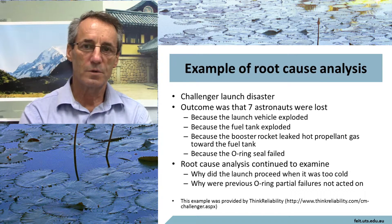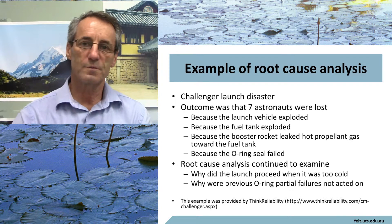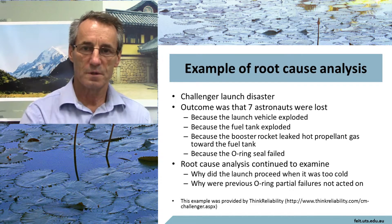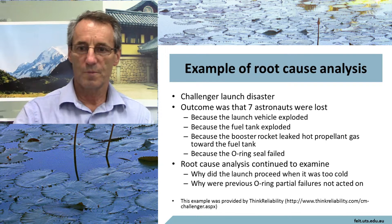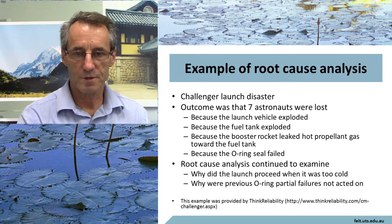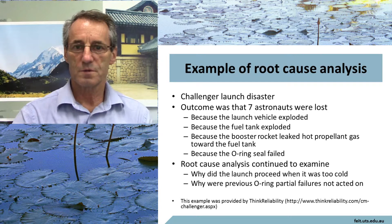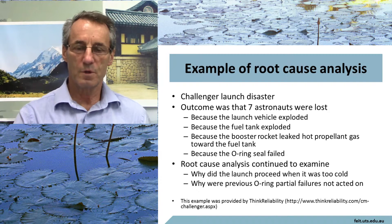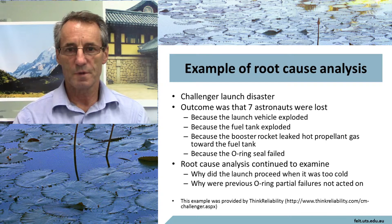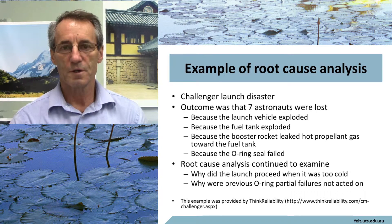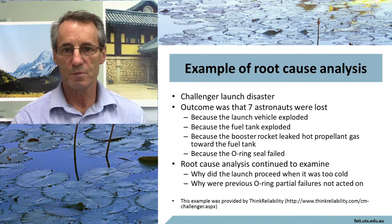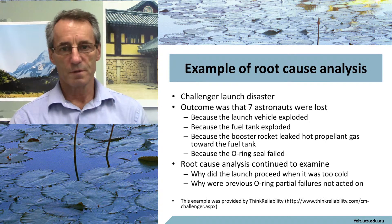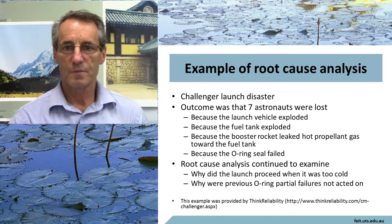That illustrates how root cause analysis operates. You start from your known outcome and you work back: what caused this? The actual outcome was that we lost seven astronauts. We lost them because the spacecraft in which they were traveling fell out of the sky. It fell out of the sky because the rocket on which it was carried exploded. And that rocket exploded because the solid fuel boosters leaked through a faulty seal in the side of them and ignited the fuel tank.